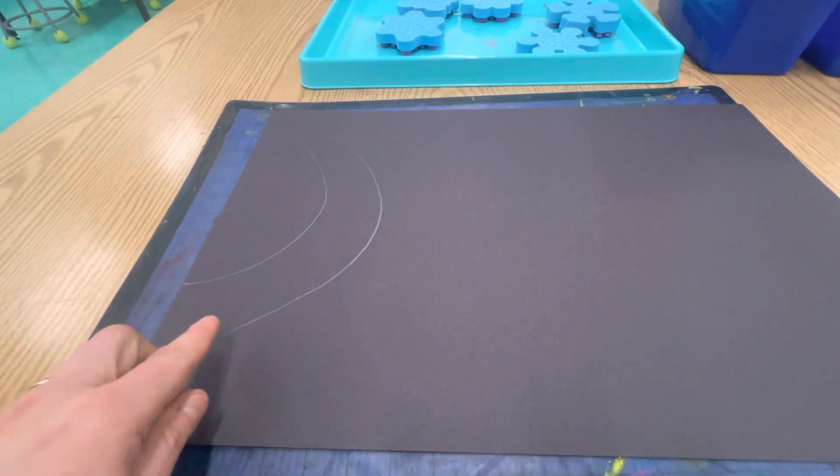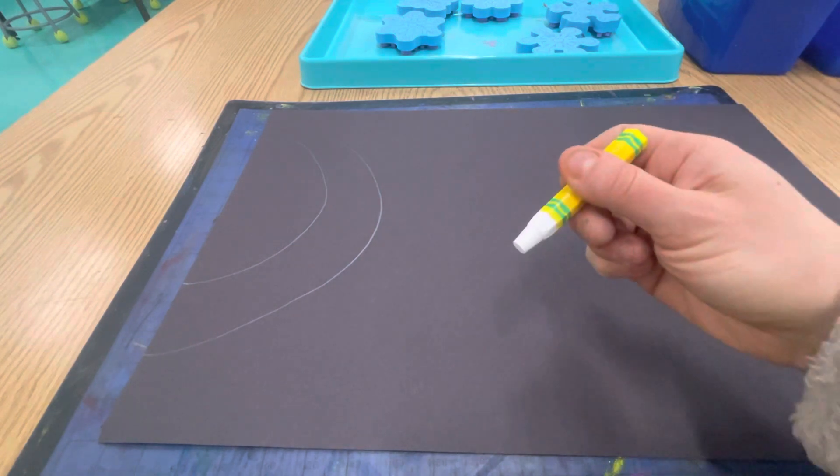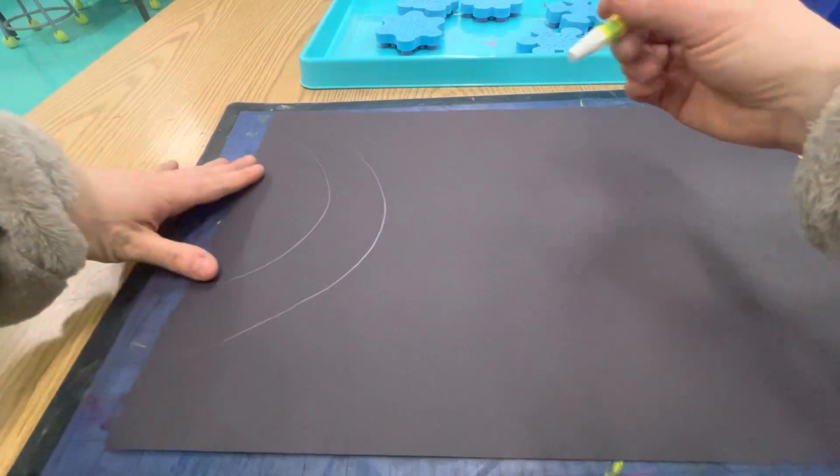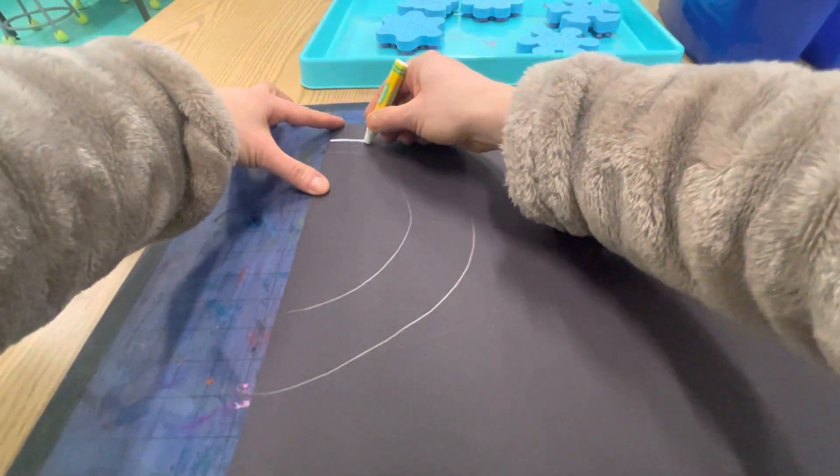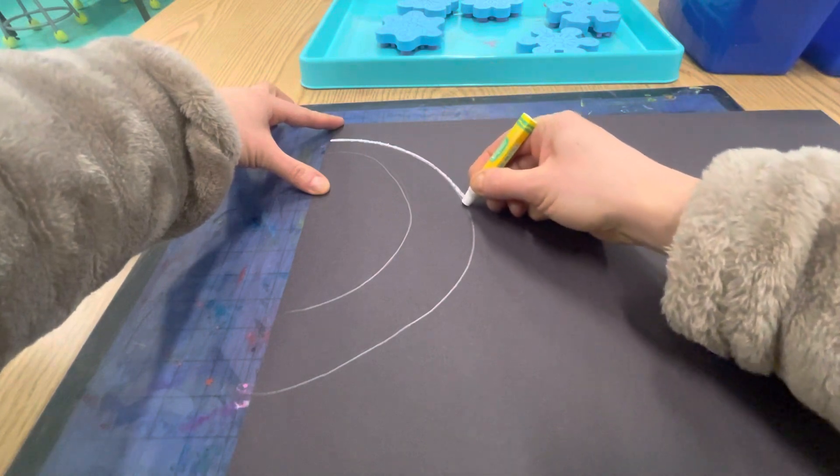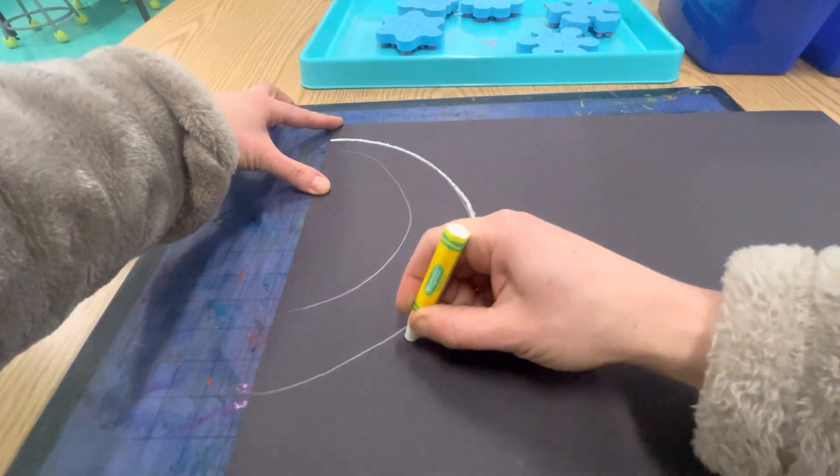When you're ready, you think you're ready for your oil pastel, raise your hand and I'm going to bring you a white oil pastel. Then you're going to trace over that line. And that's the outline for your snowman face.